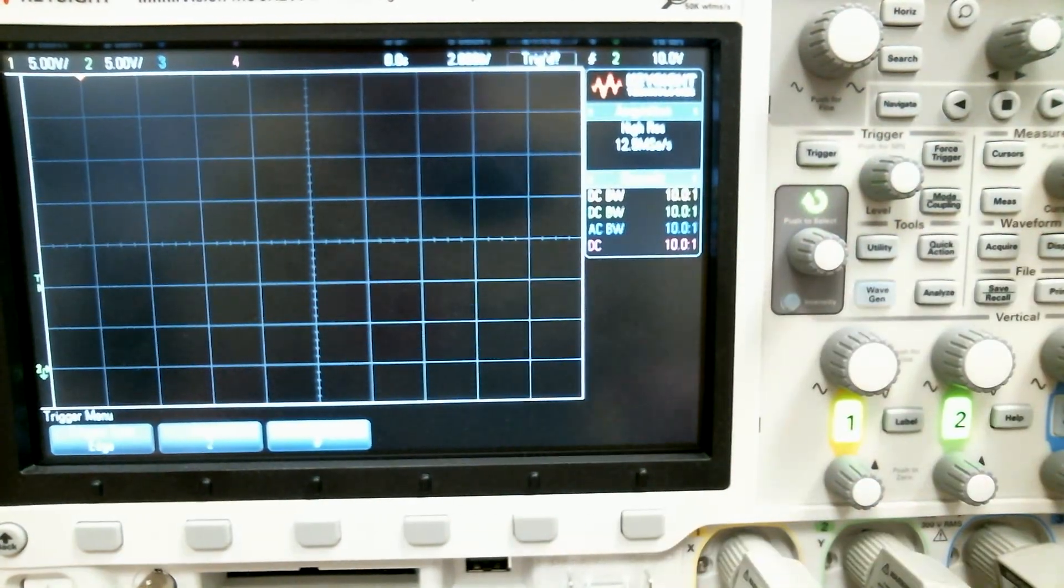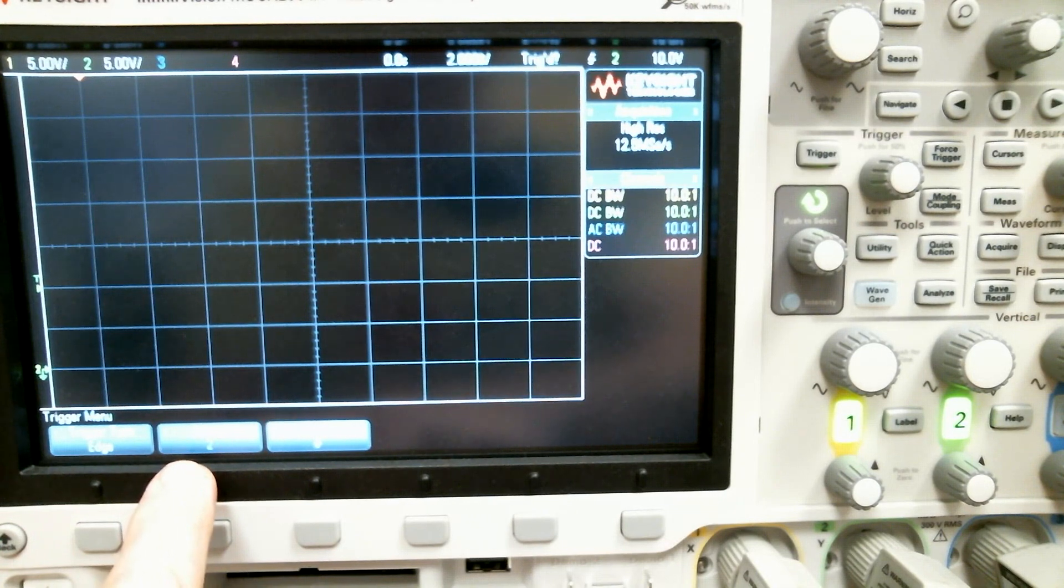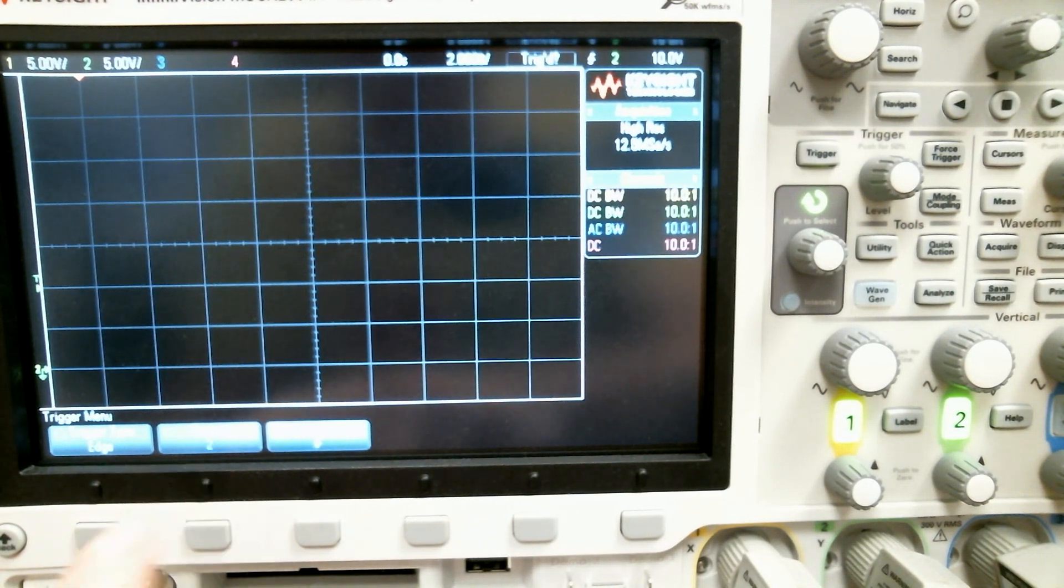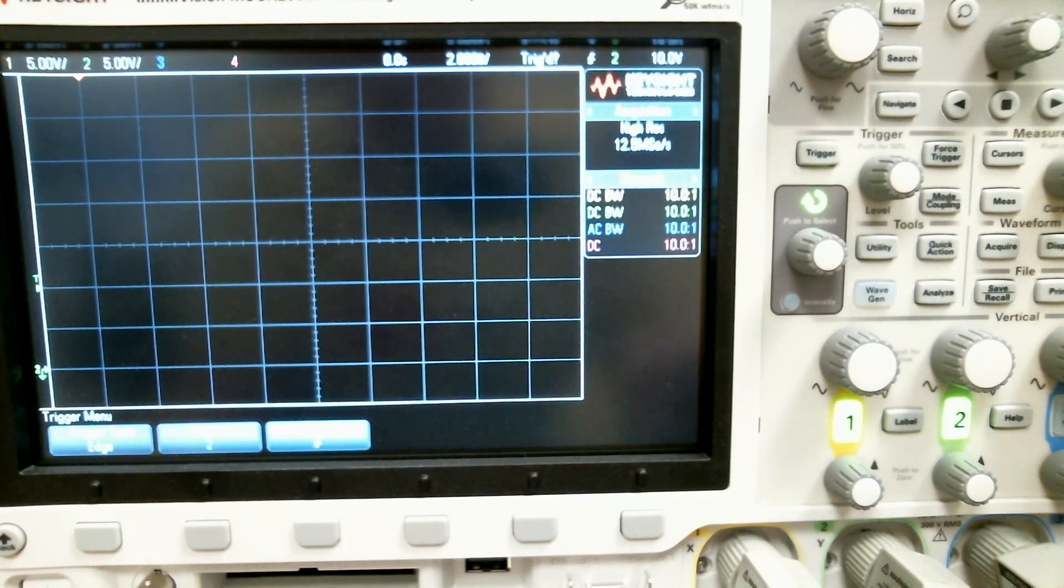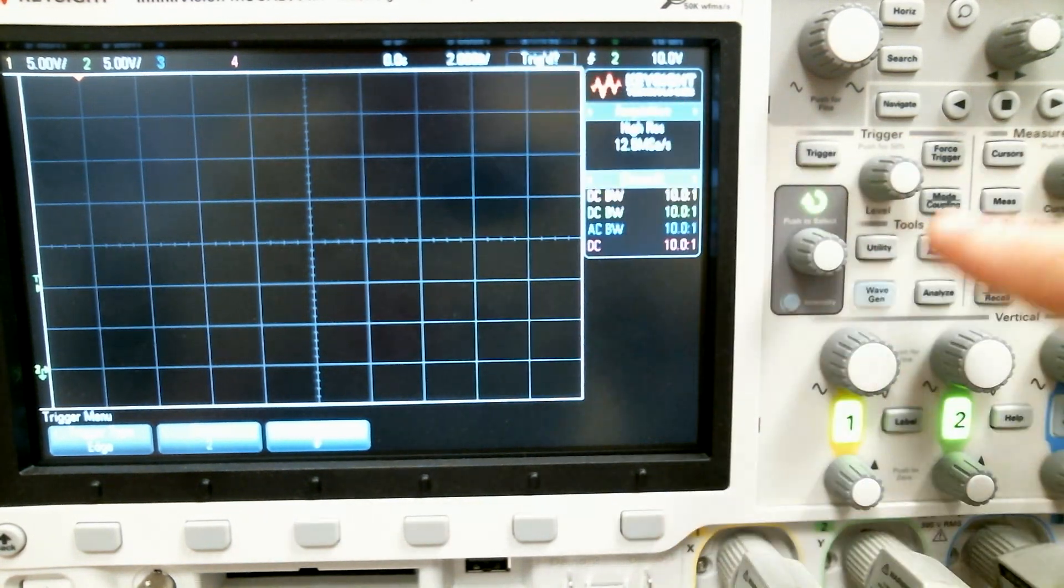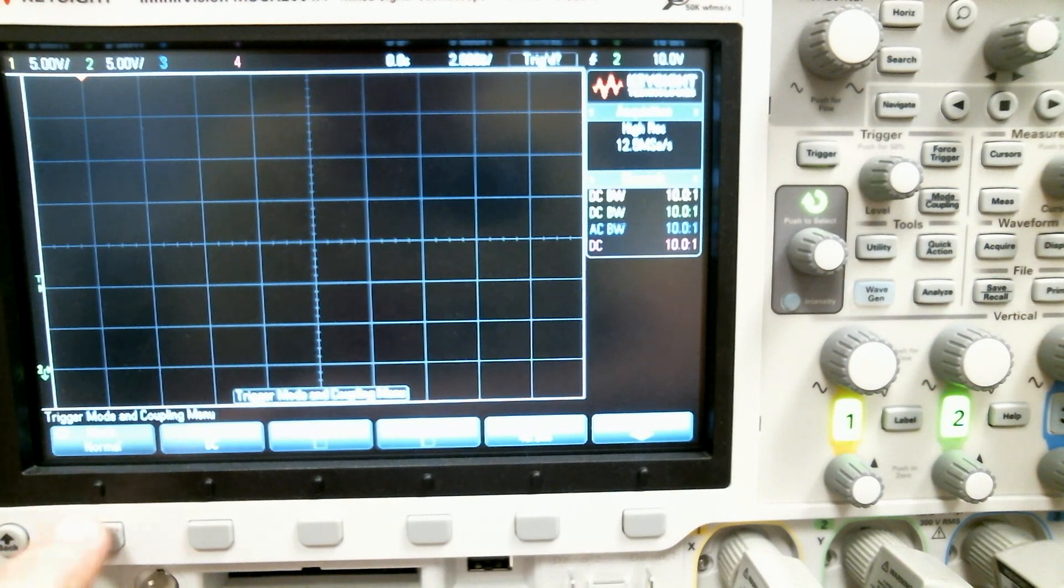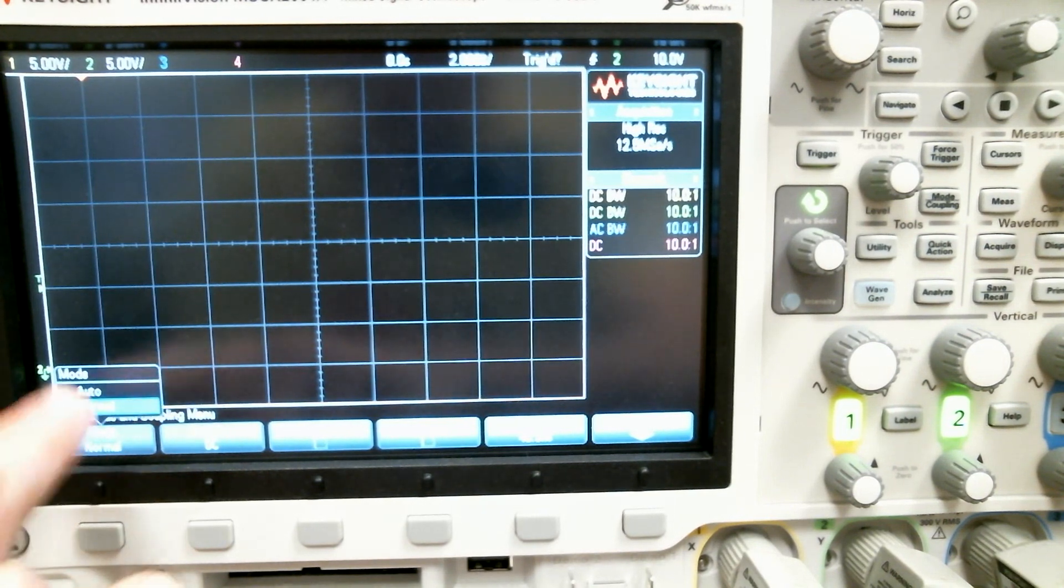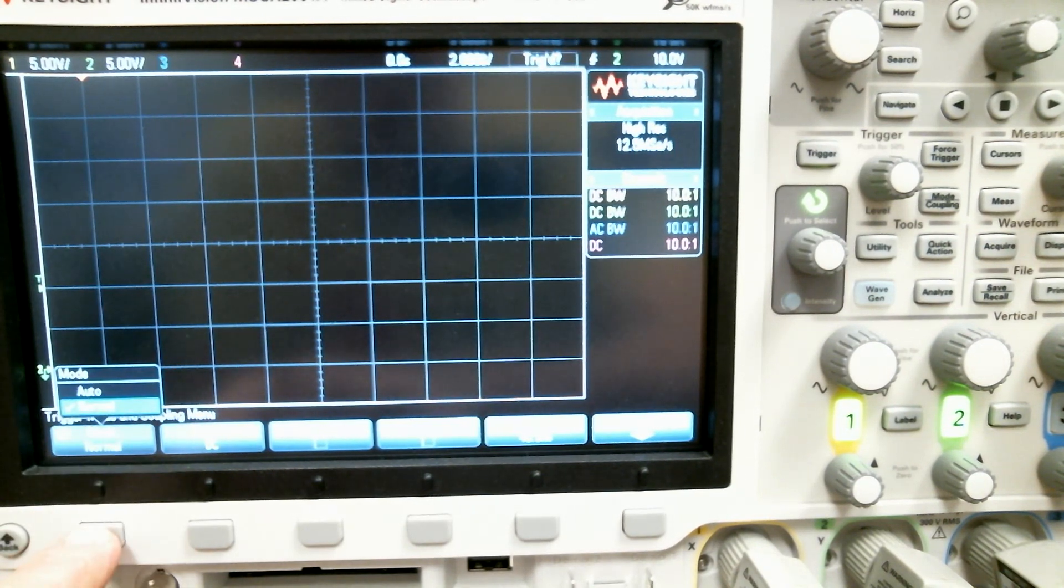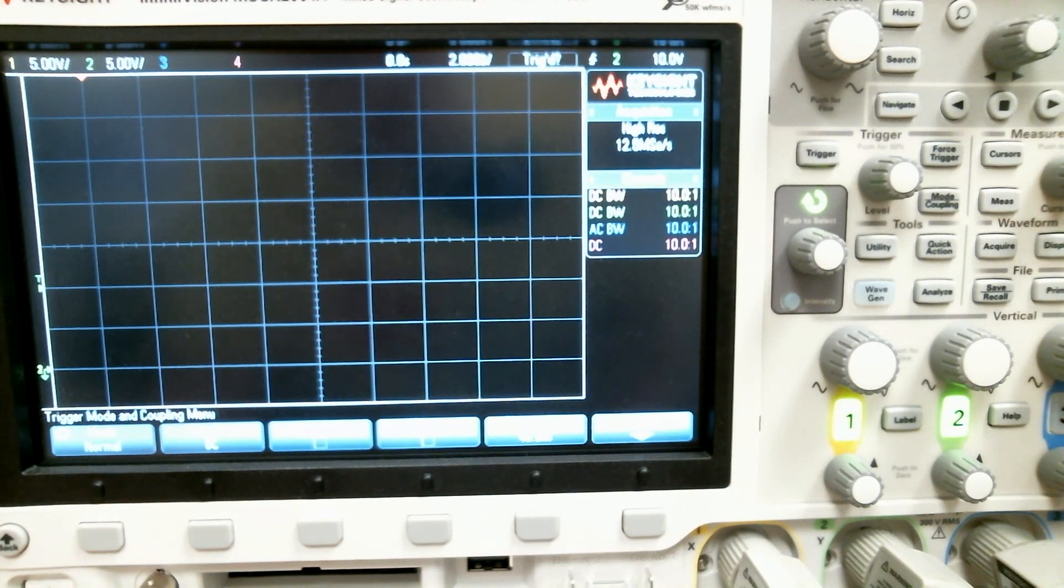Okay, so my trigger is set up edge of source two, I know you can't see it, and it's the rising edge, and here we go. It says it's waiting for a trigger. If I go over here to trigger mode, I see it's set to normal. My two options are auto and normal.